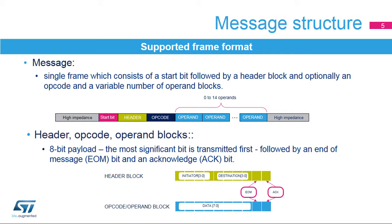The supported frame format consists of a start bit followed by a header block and optionally an opcode, then a variable number of operand blocks. Header, opcode, and operand blocks consist of an 8-bit payload where the most significant bit is transmitted first, followed by an end-of-message (EOM) bit and an acknowledge (ACK) bit.